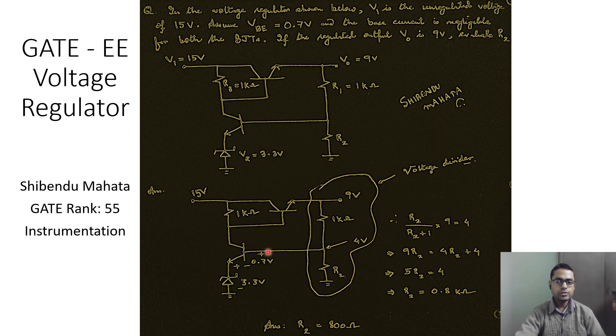So the voltage at the base of this BJT will be equal to 0.7 plus 3.3. So the voltage at this node will be 4 volts, and therefore this is the voltage that is across the resistance R2.